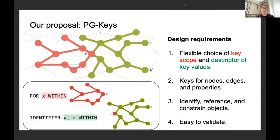Our design requirements were to have the flexible ability to choose the scope of a key. This is the red stuff, so for some thing x, here it's a node within this pattern. You plug in your favorite pattern matching language, so we're kind of agnostic about that. And a flexible choice of describing the key values. This is the green stuff, where we're using the identity y and z, the values y and z in this green pattern to identify the objects x identified in the red pattern. Again, this is a pattern in your favorite query language, probably GQL.